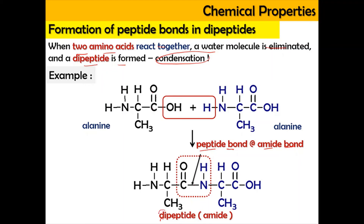It is called a dipeptide because it involves 2 amino acids. If it involves 3 amino acids, then the name is tripeptide. If it involves more than 30, it is a polypeptide. In this case, because it involves 2 amino acids, it is a dipeptide, and the byproduct is water.